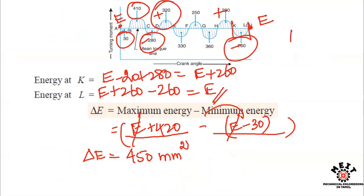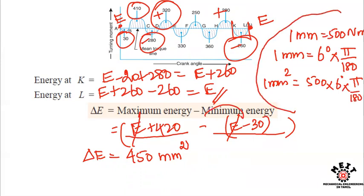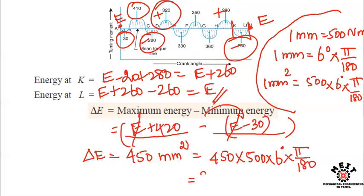To convert the area to energy units using the diagram scale: 1 mm² equals 500 Nm (y-axis scale) times 6 degrees times π/180 (converting to radians). Therefore, 450 mm² multiplied by this scale factor gives the fluctuation energy ΔE equal to 23,566 Nm.